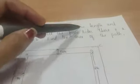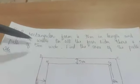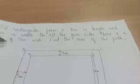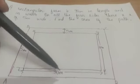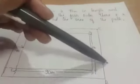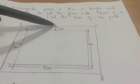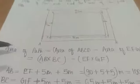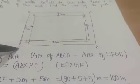A rectangular farm is 90 meters in length and 65 meters in width. On all four sides there is a path of 5 meters wide. Find the area of the path. Area of path is given by area of bigger rectangle minus area of smaller rectangle.